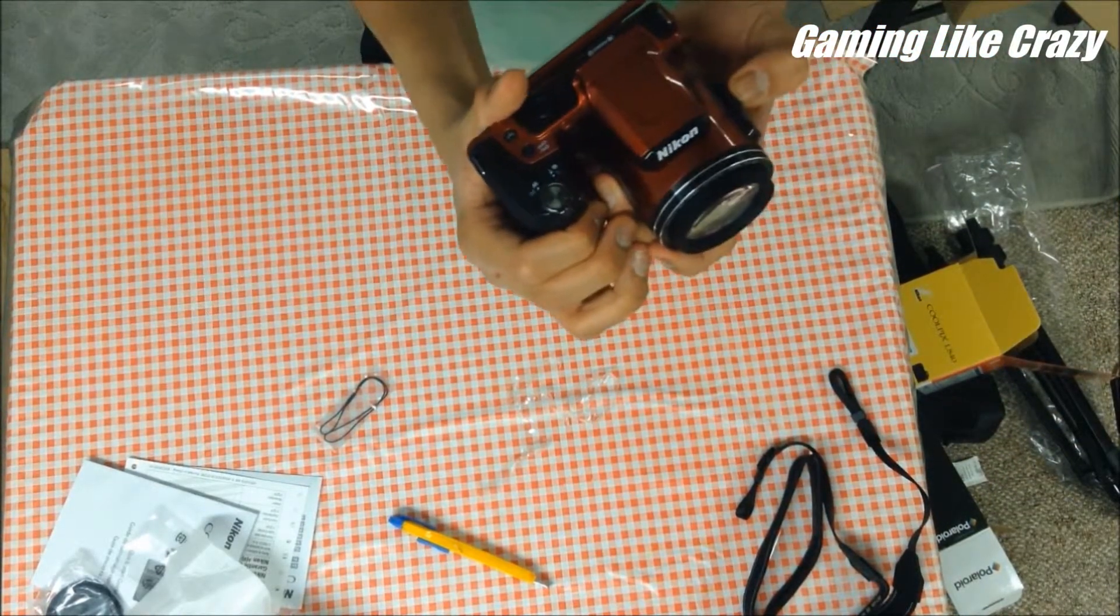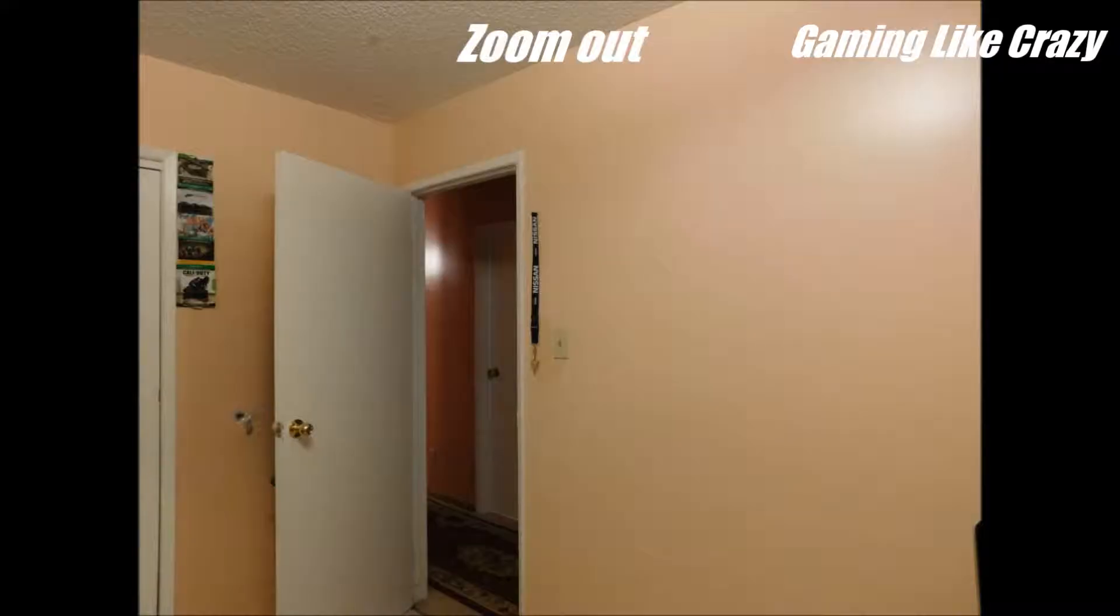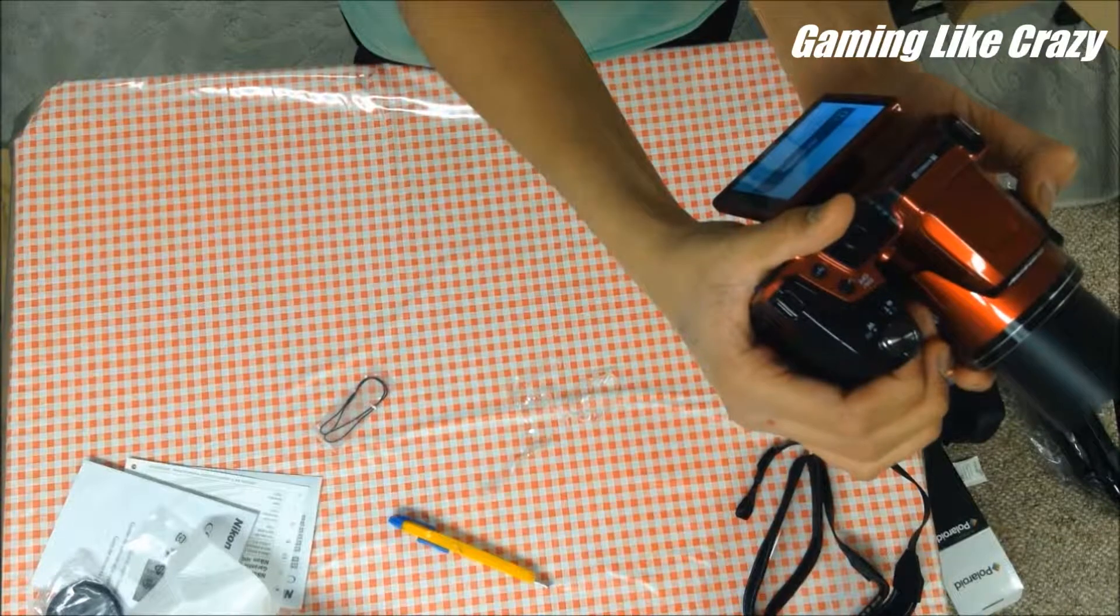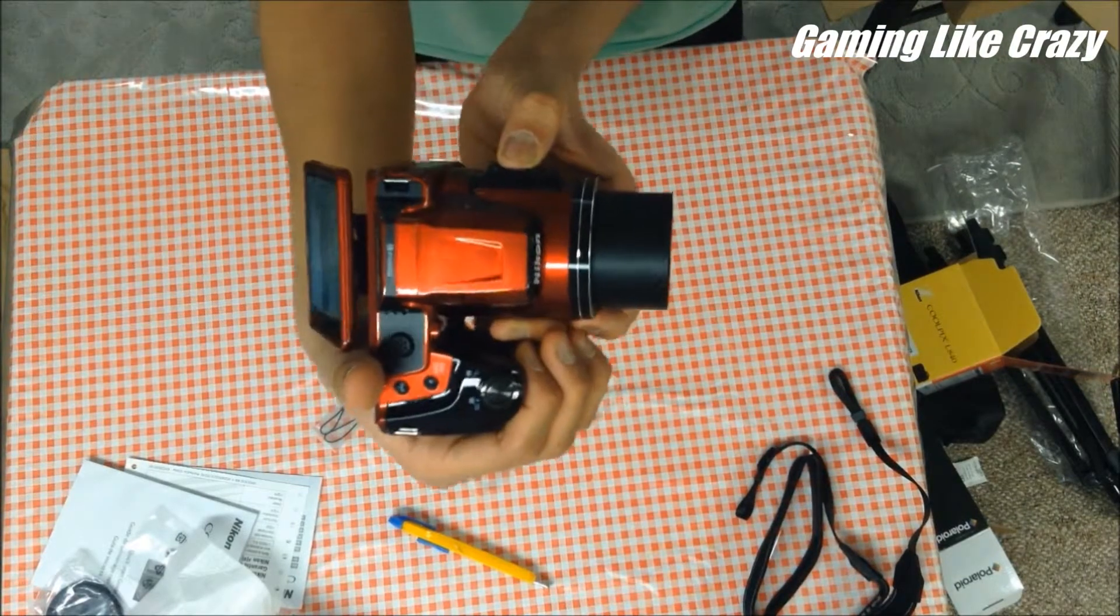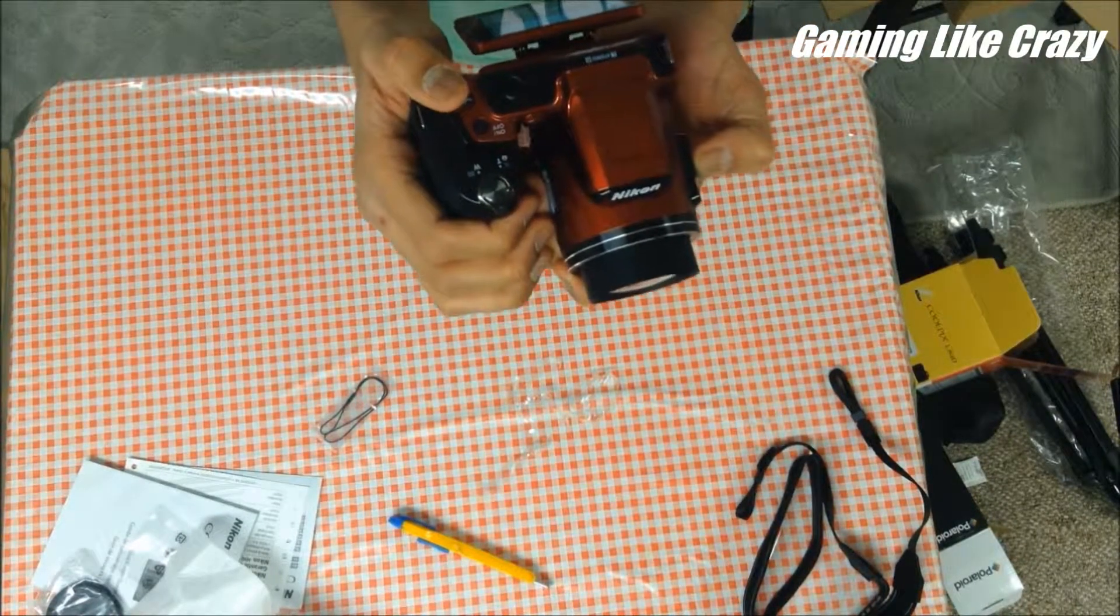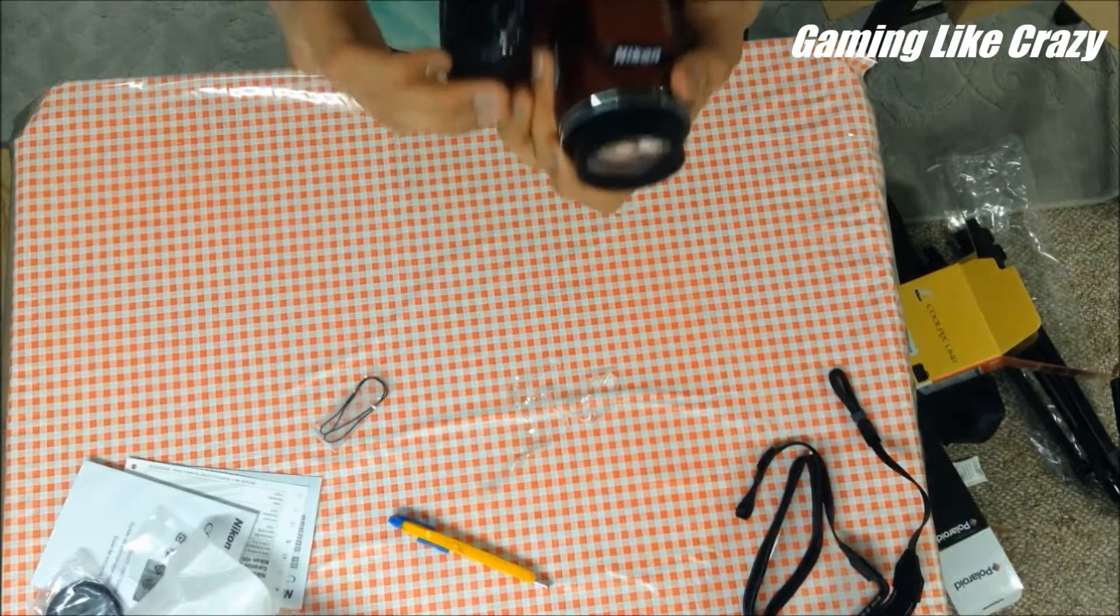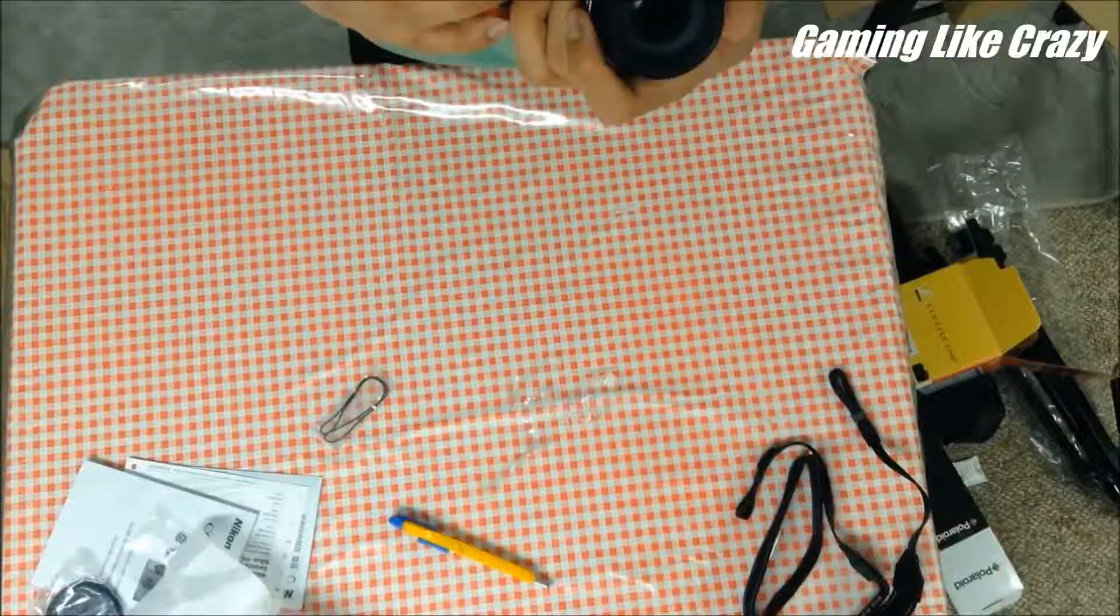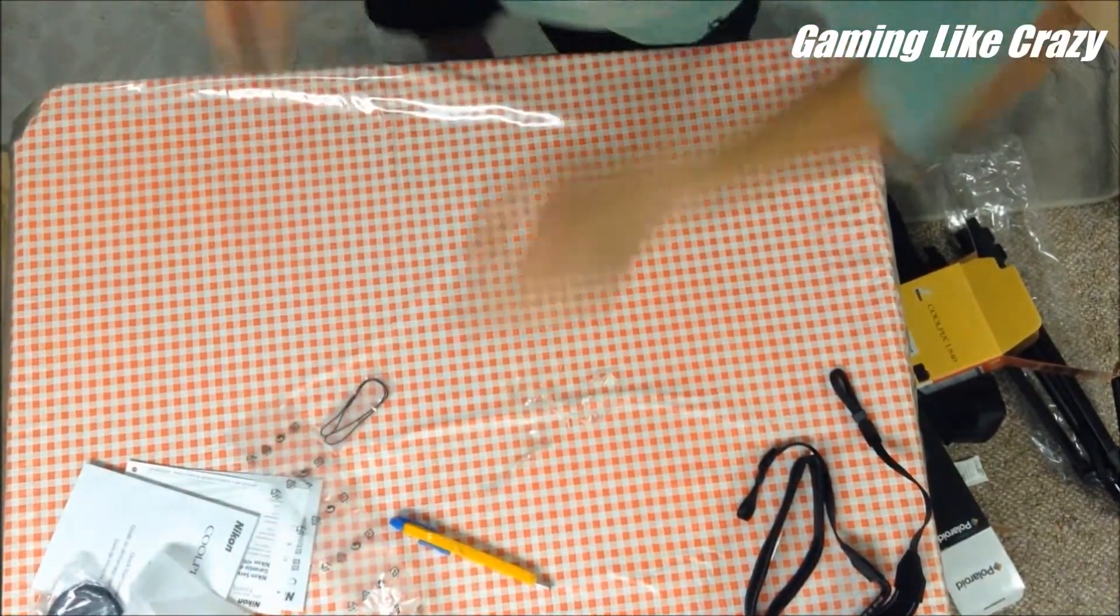I'm also getting a bag for this. Let's turn this on - English, time zone, I'll do that later. This is nice. When you look through the viewfinder it looks yellowish, but when you take a picture it becomes white. Let's check out the zoom lens. This is pretty far.